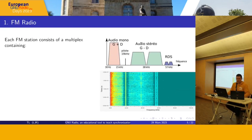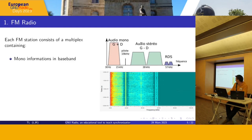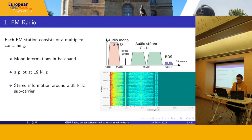Let's quickly see what FM radio is. Each FM station contains mono information in baseband, a pilot at 19 kHz, the stereo information at 38 kHz, and the RDS signal at 57 kHz.